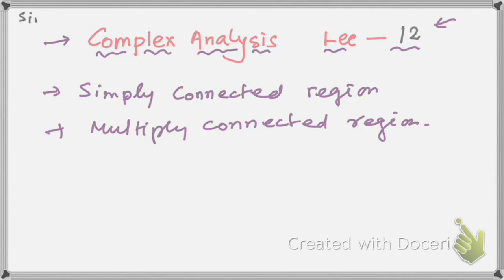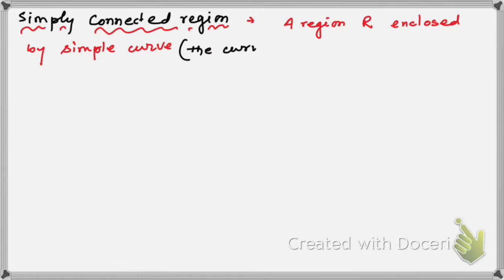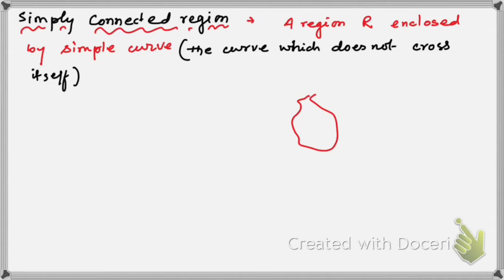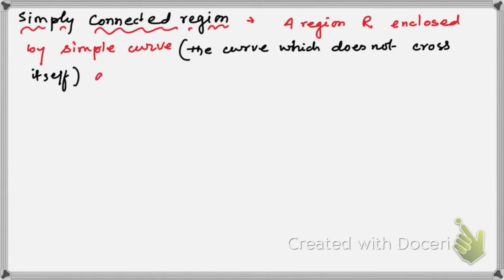Let's start. What do we mean by a simply connected region? A region R is enclosed by a simple curve. A simple curve is a curve which doesn't cross itself. If you draw a curve that crosses itself, that is not a simple curve. This is a simple curve — one which doesn't cross itself. The region enclosed by it is called a simply connected region.